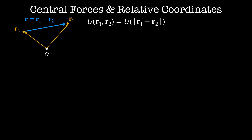We'll start by setting up the geometry of this system. We have two particles: one of mass m1 located at a position r1 from the origin, and the other has mass m2 and is located at some position r2 from the origin. They're separated by the vector r1 minus r2. A central force is a force that depends only on the distance between the two bodies. Therefore, the potential only depends on the magnitude of the vector r1 minus r2. Examples of this are the gravitational force and the Coulomb force.